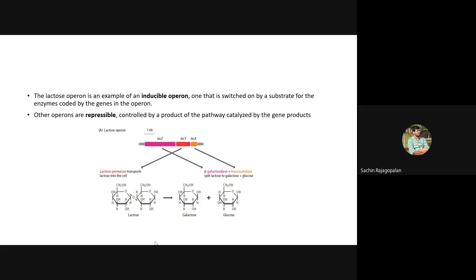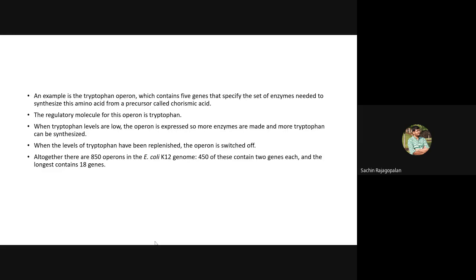Other forms of operons are repressible operons. In these, gene products try to control the process — if enough of the pathway has been carried out and enough product has already been formed, the product signals that no more production is required. So the operon is switched off. Just as there are inducible operons, there are also repressible operons.